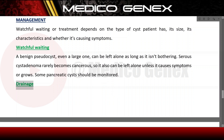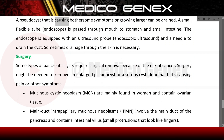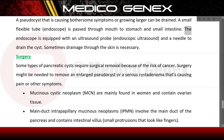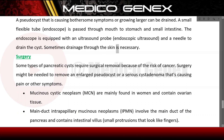Drainage is an option for a pseudocyst that is causing bothersome symptoms or growing larger. A small flexible tube — an endoscope — is passed through the mouth to the stomach and small intestine. The endoscope is equipped with an ultrasound probe and a needle to drain the cyst. Sometimes drainage through the skin is necessary.